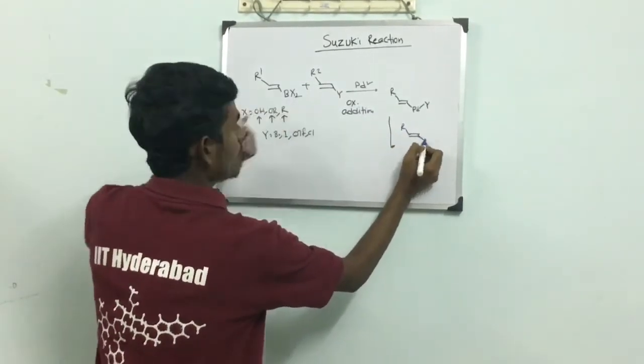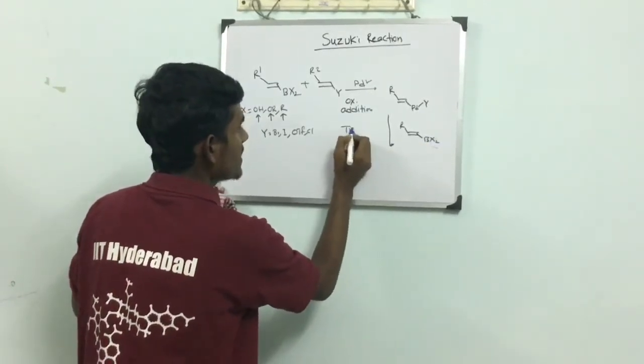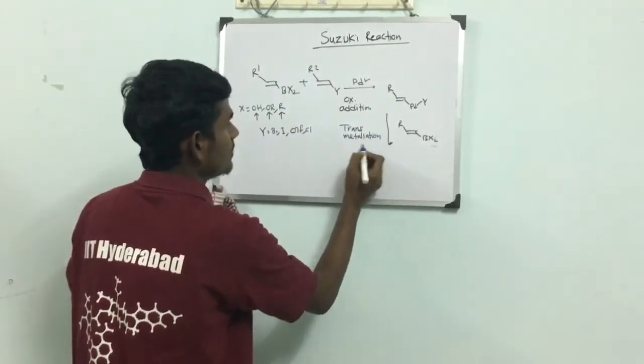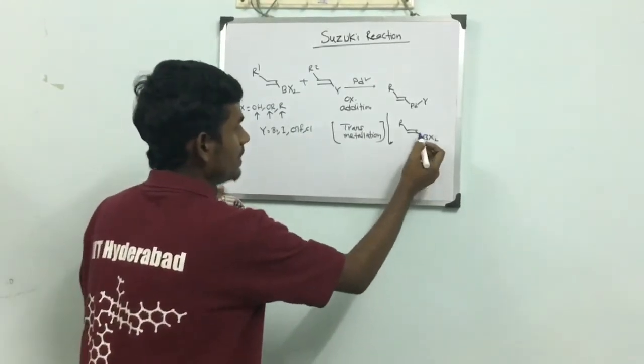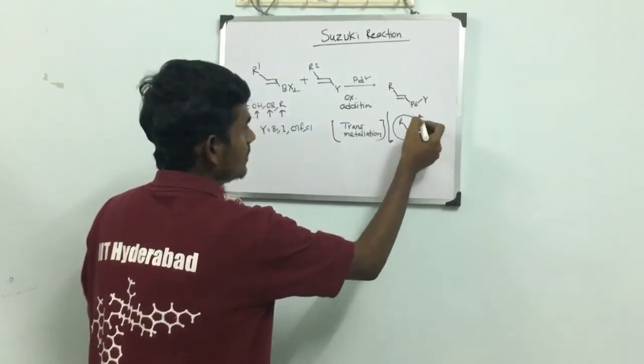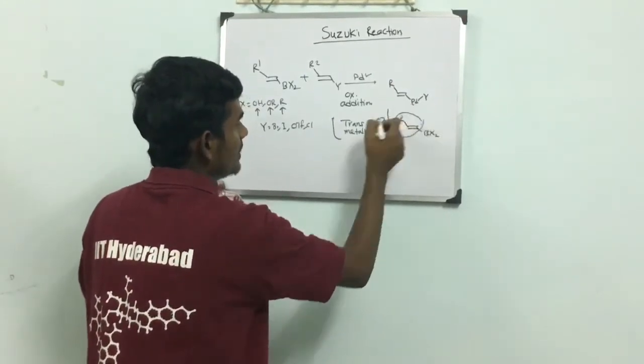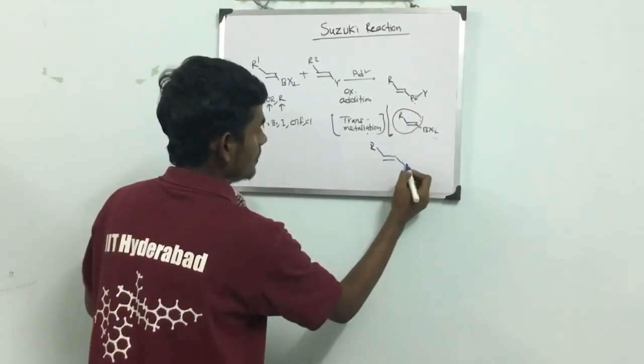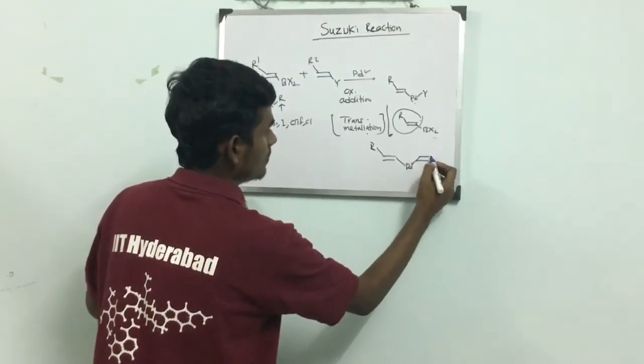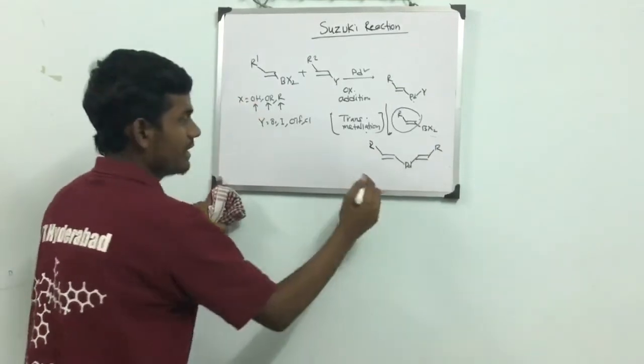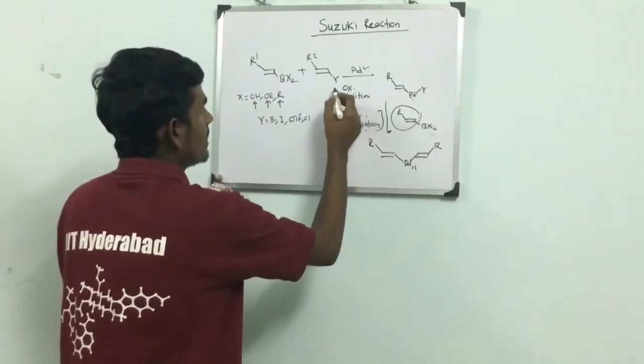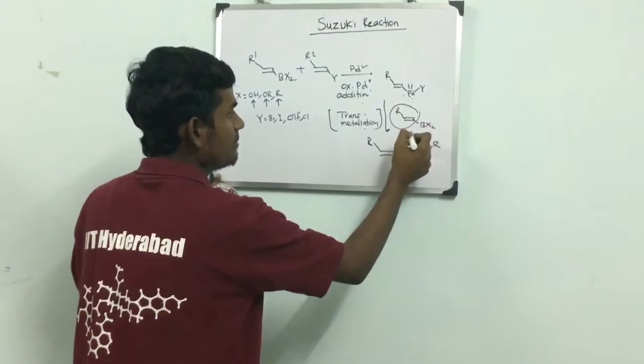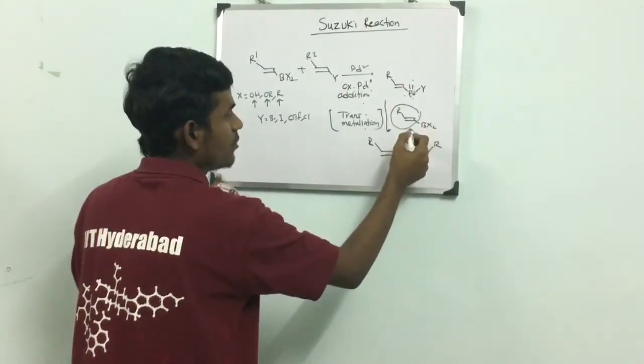This boron species undergoes what is called transmetallation. Please look carefully. What happens? This alkenyl species gets transferred to the metal palladium. We are doing transmetallation. Thus what happens? Palladium R forms. Here you may find one important thing - it was first oxidative addition of palladium 0 species to give palladium 2. And in the second step, the palladium 2 species reacts with this boron species.